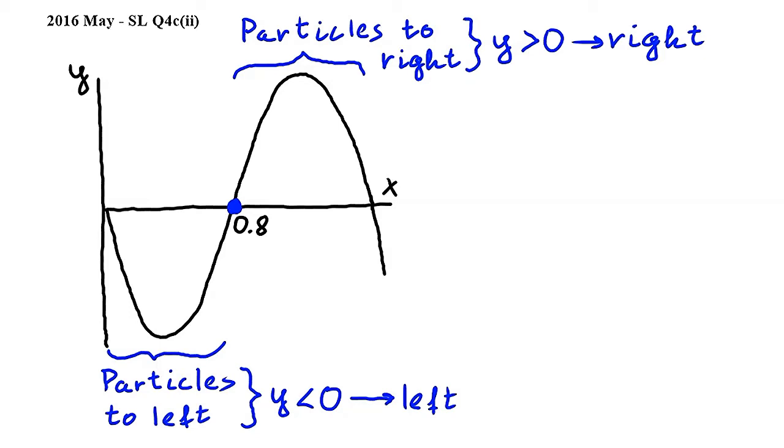So then we can conclude that particles to the left of our particle have been displaced left of their equilibrium position, and particles to the right of our particle have been displaced to the right of their equilibrium position. Our particle is at the middle of a rarefaction.